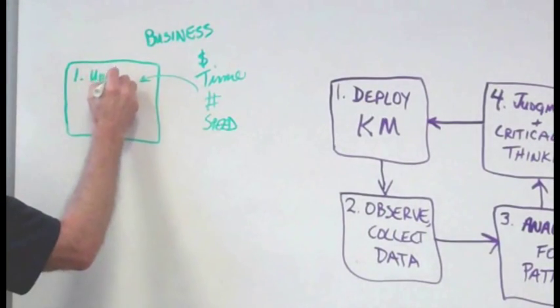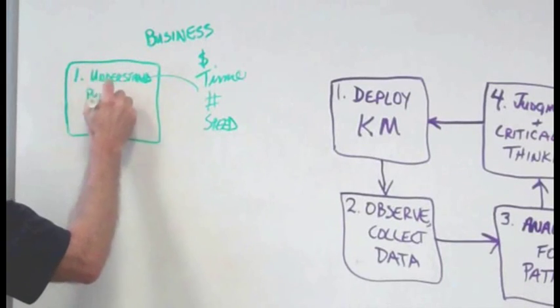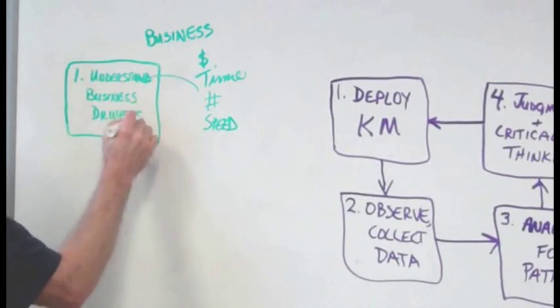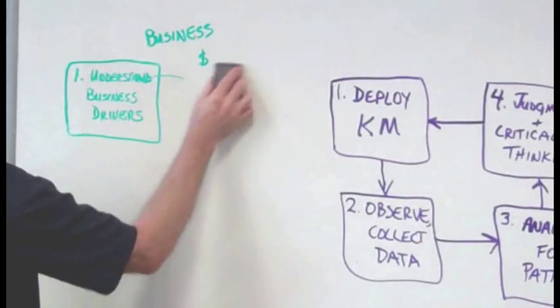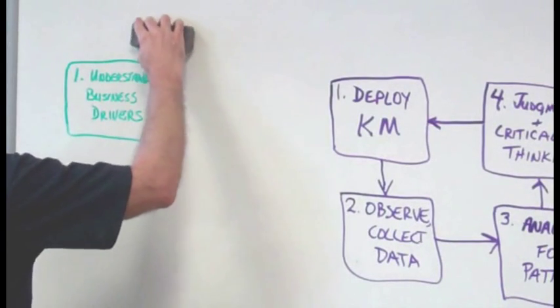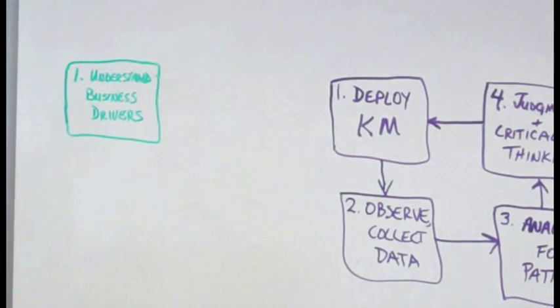Step one is understand the business drivers. You know, business landscapes do have a way of changing. So what is the business focus for the near term? What are the business metrics to meet this year? Or perhaps there's a long-term strategy for which a KM approach would be a critical success factor.